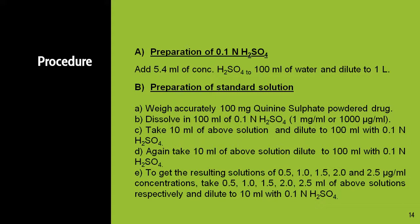To prepare the standard solution, weigh accurately 100 mg of quinine sulfate powder, transfer it into a volumetric flask, and dissolve in 100 ml of 0.1 normal H2SO4. The concentration is 1 mg per ml, or 1000 micrograms per ml — this is our stock solution. From this stock solution, take 10 ml and dilute to 100 ml with 0.1 normal H2SO4 to get 100 micrograms per ml.